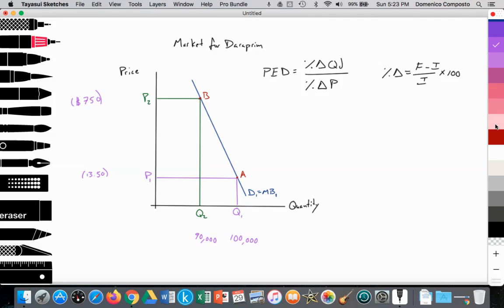So PED would be calculated as so. So the percent change in quantity demanded, the final value is 90,000 minus the initial value divided by the initial value, all of this, then times 100.